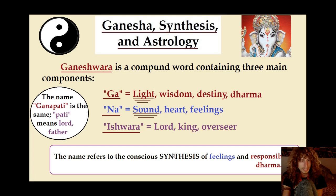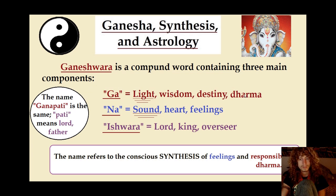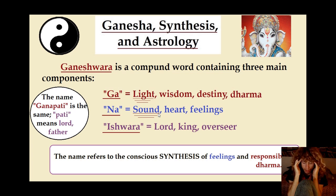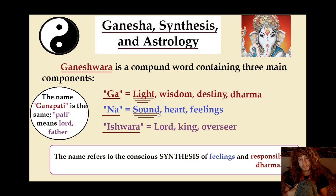Essentially, Ganeshwara is a compound word containing three main components. Ga is the light, wisdom, destiny, dharma. Na, like Narayana, is sound — it's the heart, it's our feelings. And light and sound are two different things. The vision that we have is kind of more of a Mars, sun, nobility, whereas the sound we have is kind of a Jupiter, moon feeling. And both of these need to be in a synthesis in the present moment.